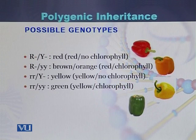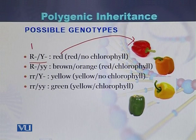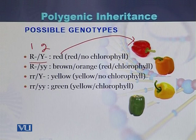Here we can see the different possibilities of genotypes. If there is allele R and allele Y, the color of the pepper would be red. Allele R belongs to gene number 1, and allele Y belongs to gene number 2. So these two genes jointly determine color expression in the pepper, and in this case it is red.